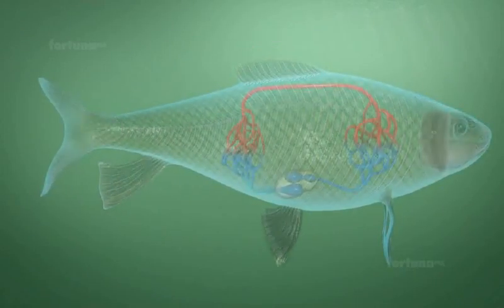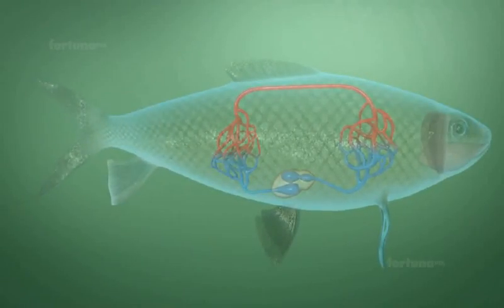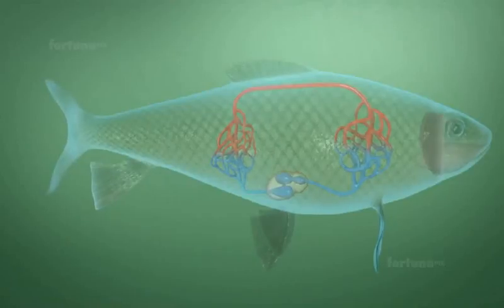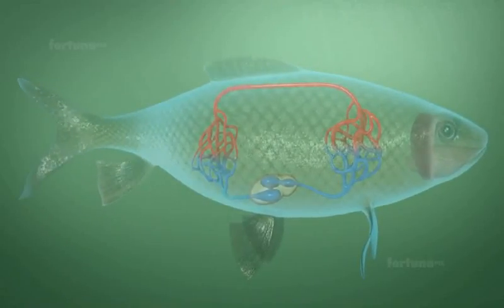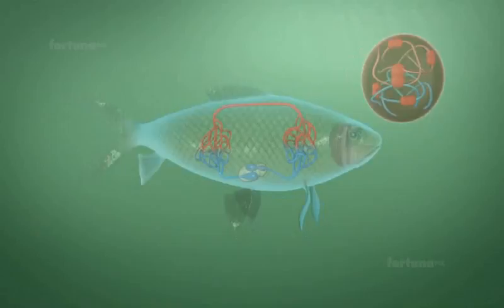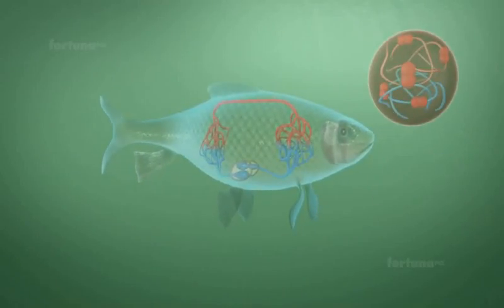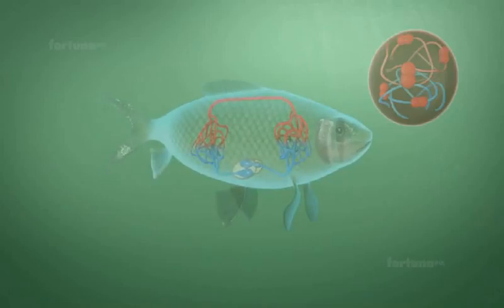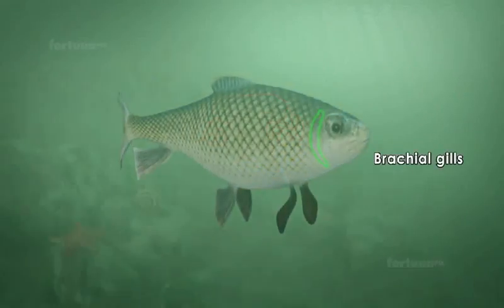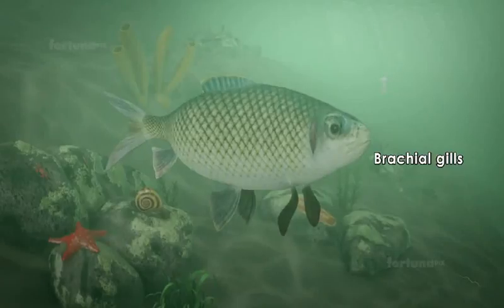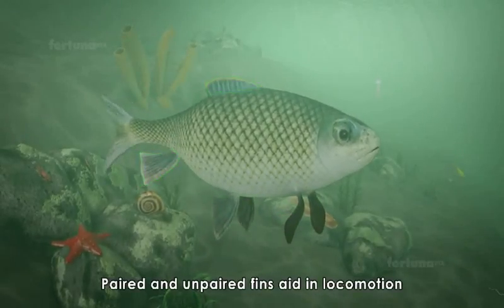There is a two-chambered heart present on the mid-ventral side of the body. The circulatory system is closed, as blood flows through blood vessels. The blood contains red blood cells with hemoglobin, which is used in the transportation of respiratory gases.